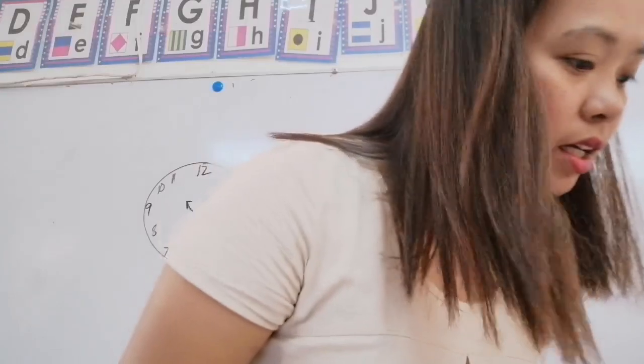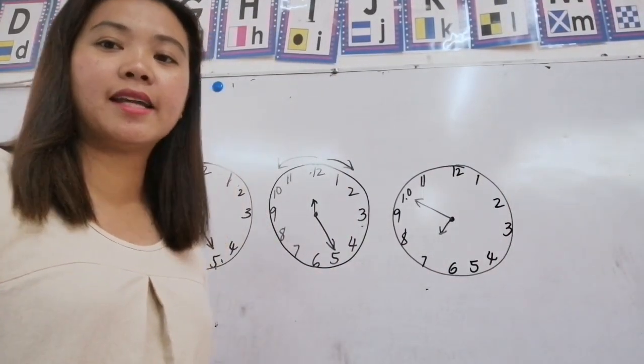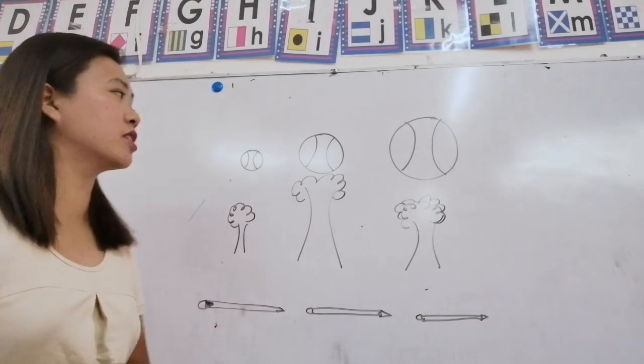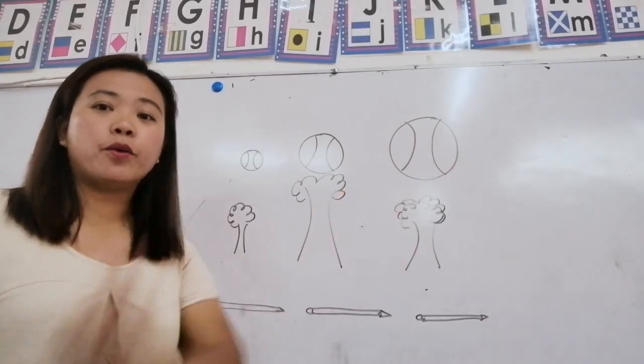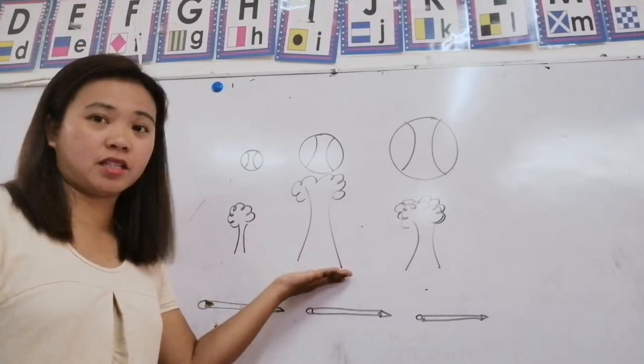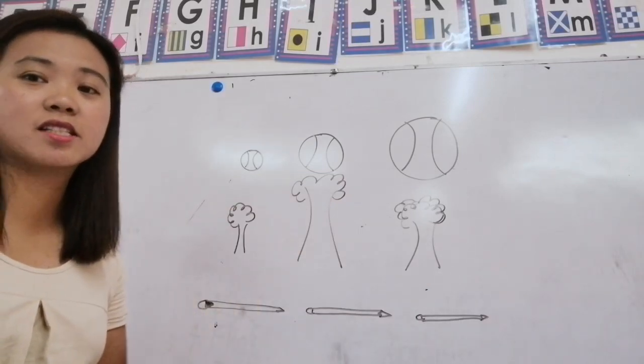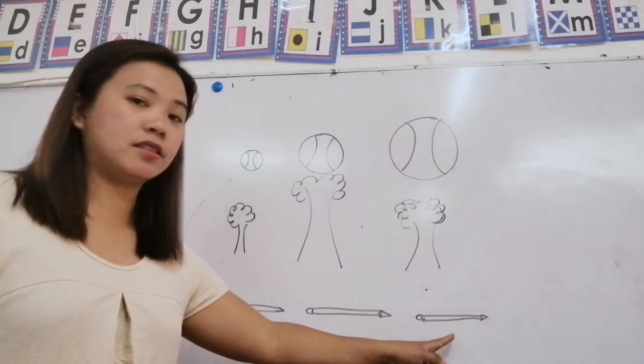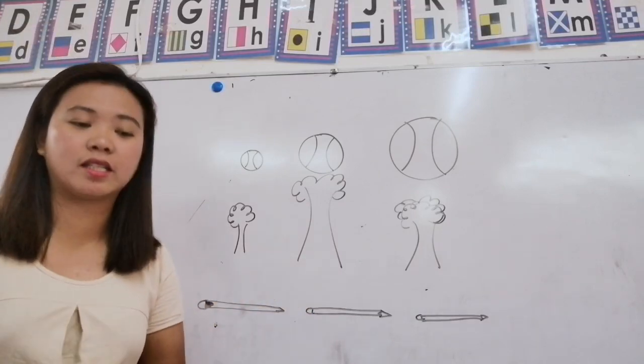Now let's go to comparing sizes. For comparing sizes, there are pictures there and I'm just going to ask you, which one is the biggest ball? So this one. Which one is the smallest ball? This one. Which one is the tallest tree? Which one is the shortest tree? Which one is the longest pencil? So this one. Which one is the shortest pencil? That one. So the comparing sizes is so easy.